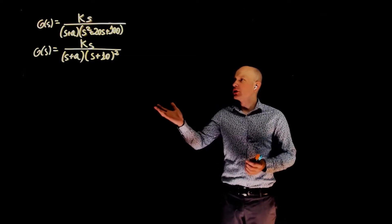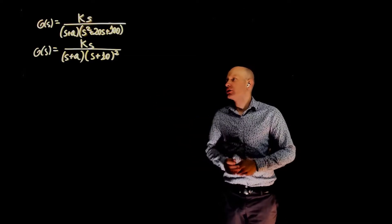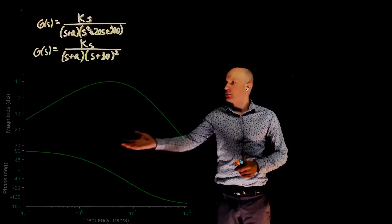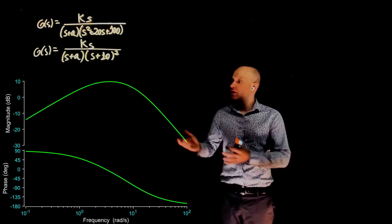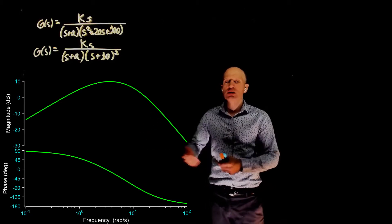In this example, we have a transfer function that has two parameters, one is k, one is a, and we obtain the following Bode plot for the function g. The question is, given this Bode plot, what is k, what is a?